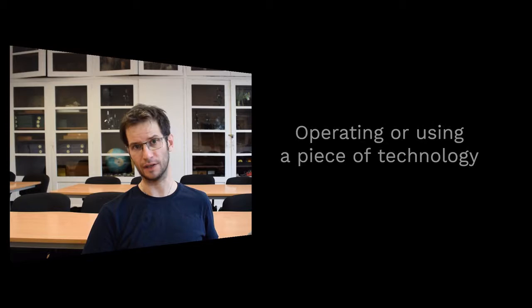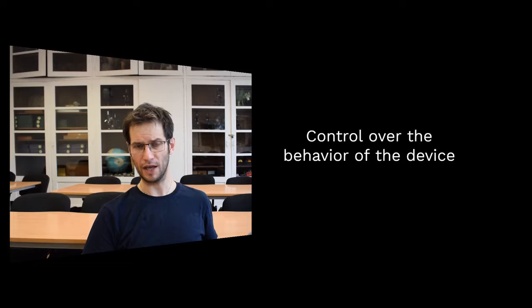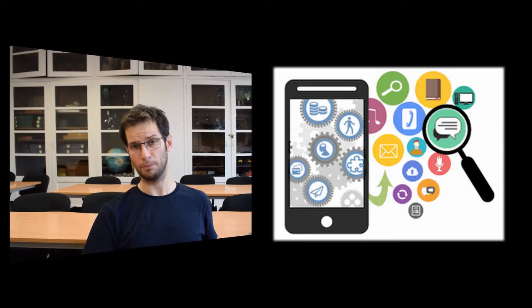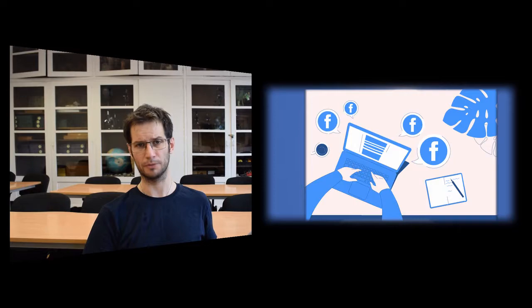What does that mean? Well, essentially, operating a piece of technology means that at the very basic level, we're able to switch it on and off. In other words, we have full control of the behavior of the technology we're using. This means, for example, that we are familiar with all the features or part of the features of a given piece of technology or an application. So when we operate Facebook, that means that we can create a group, post a picture, a text, or simply control the privacy settings.